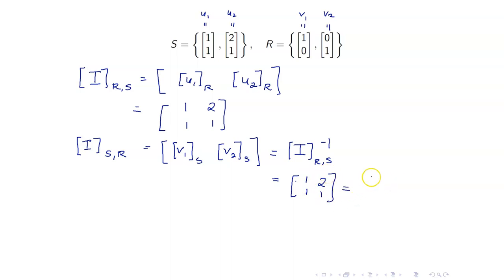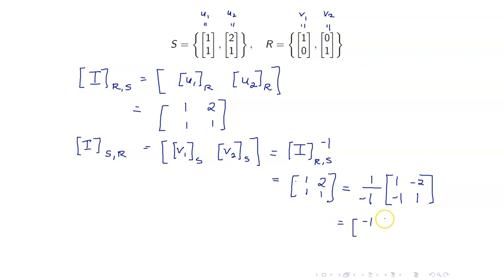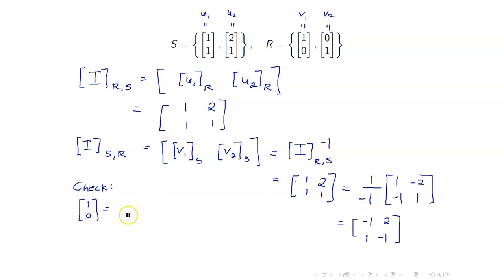To get the transition matrix from R to S, instead of computing coordinate vectors directly, we use our theorem: it equals the inverse of the transition matrix from S to R. For the 2×2 matrix [[1,2],[1,1]], the inverse is (1/(AD−BC)) times the adjugate, giving determinant −1, so the inverse is [[-1, 2],[1, -1]]. Let us verify: the first column [−1, 1] should be the coordinate vector of V1=[1,0] with respect to S. Indeed, −1 times [1,1] plus 1 times [2,1] gives [−1+2, −1+1] = [1, 0]. Correct.